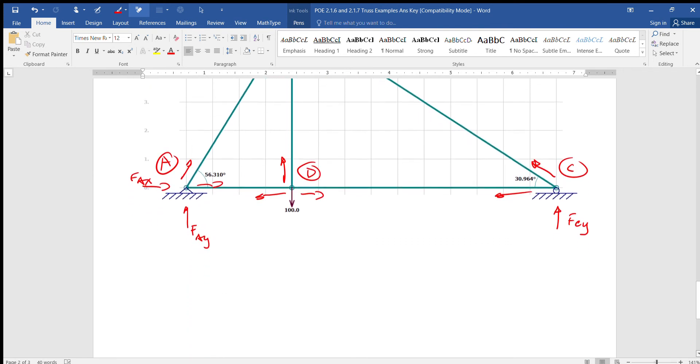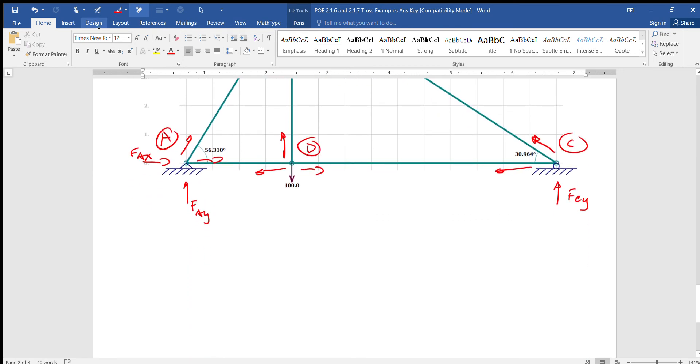And distances are all up there. So the sum of the moments about A equals zero. We have negative 100 times 4, negative 25 times 6, and then Fcy times 14. And I hope my screen didn't just go dark for you guys, it did for me because it's on energy saver.